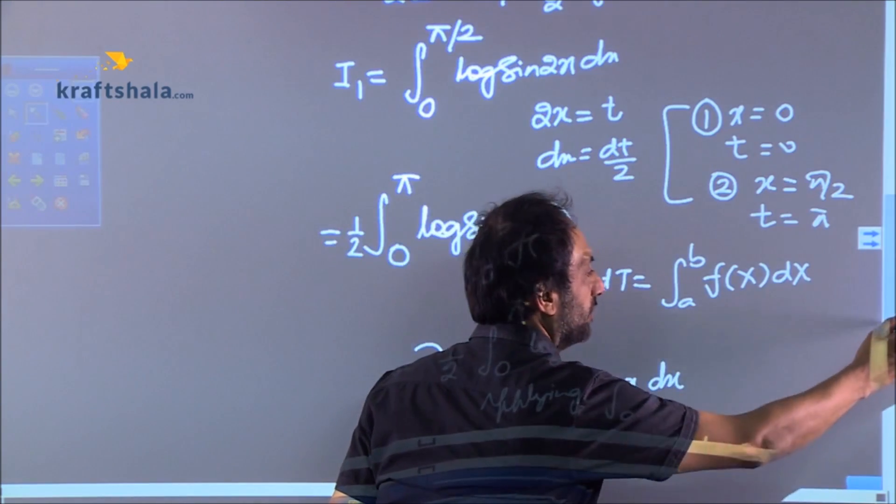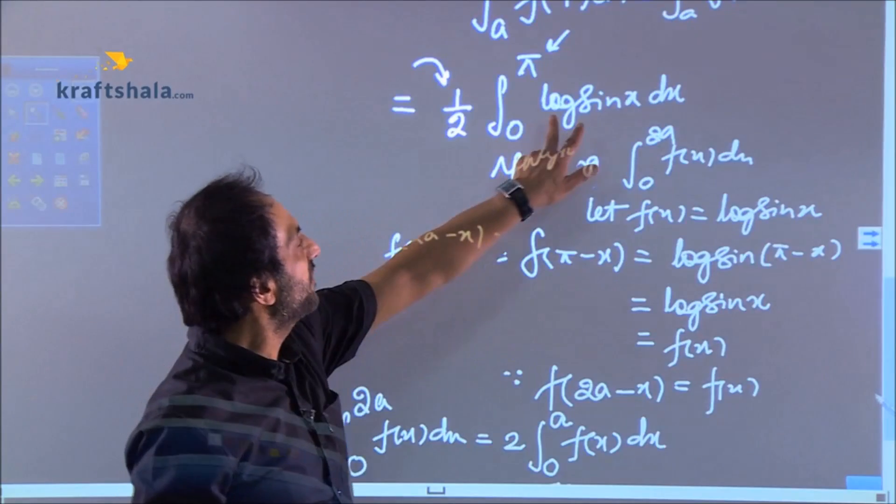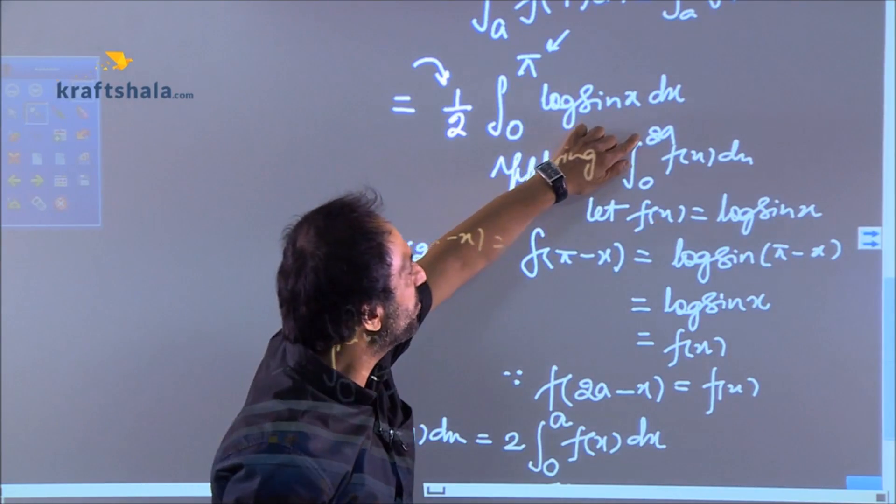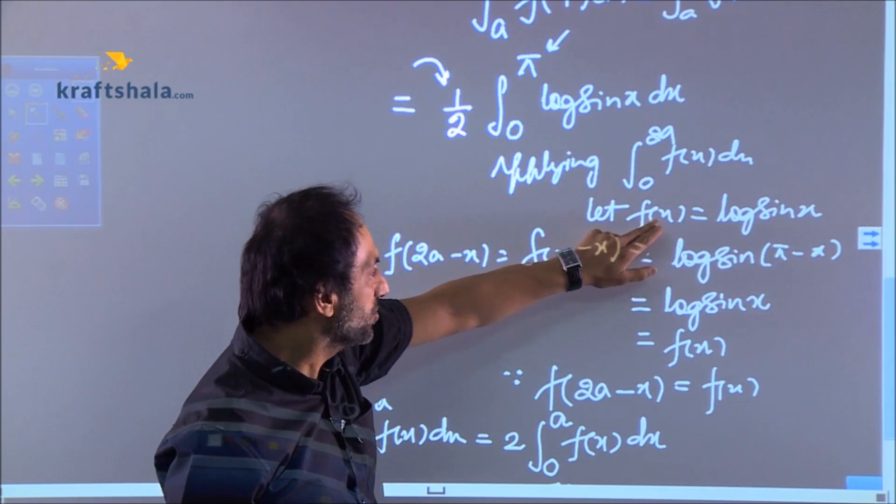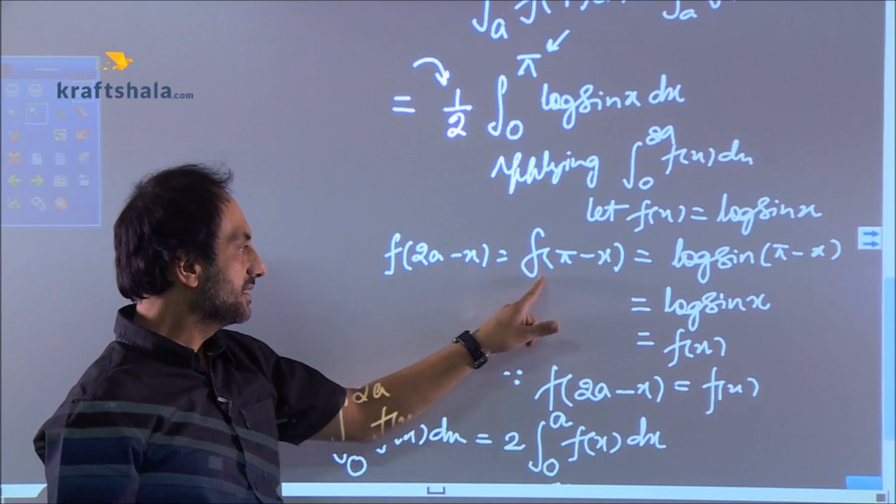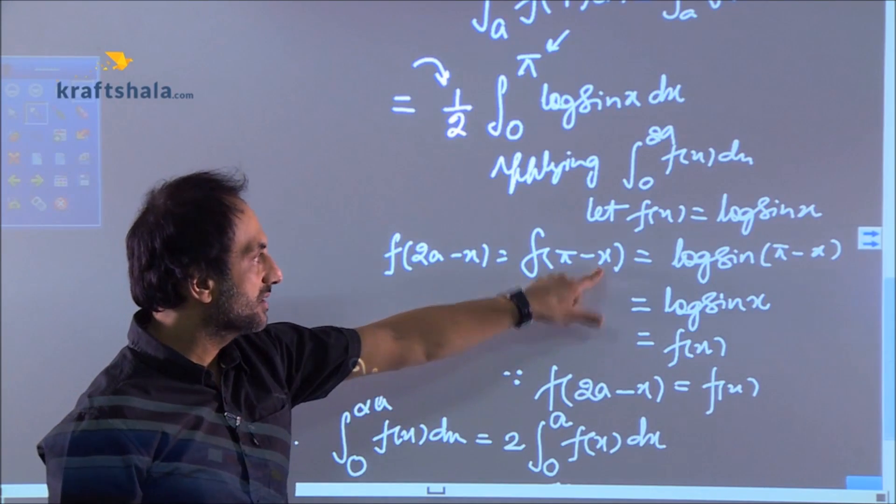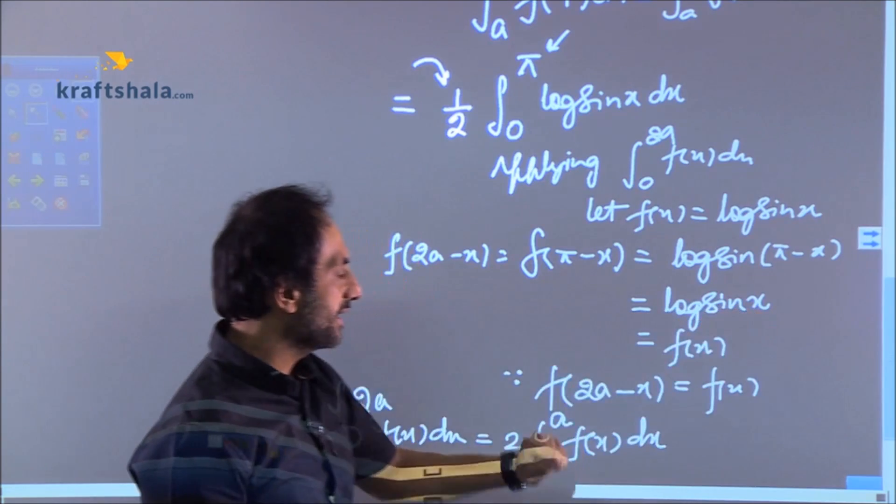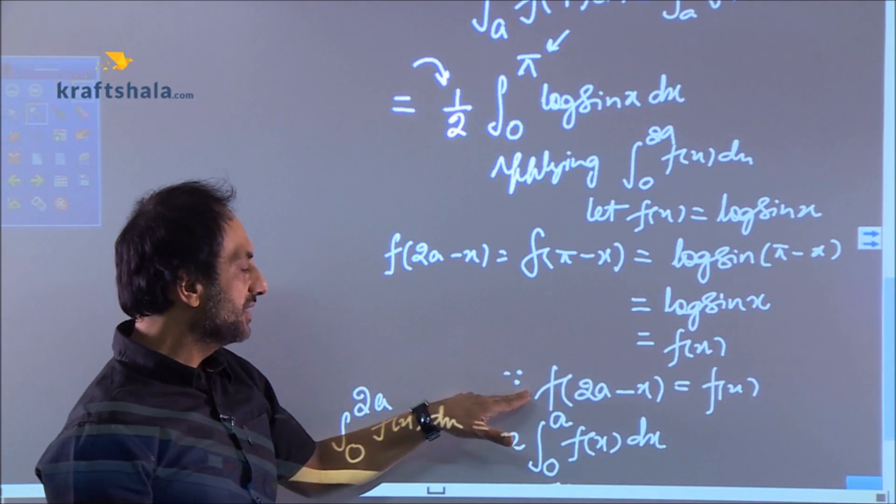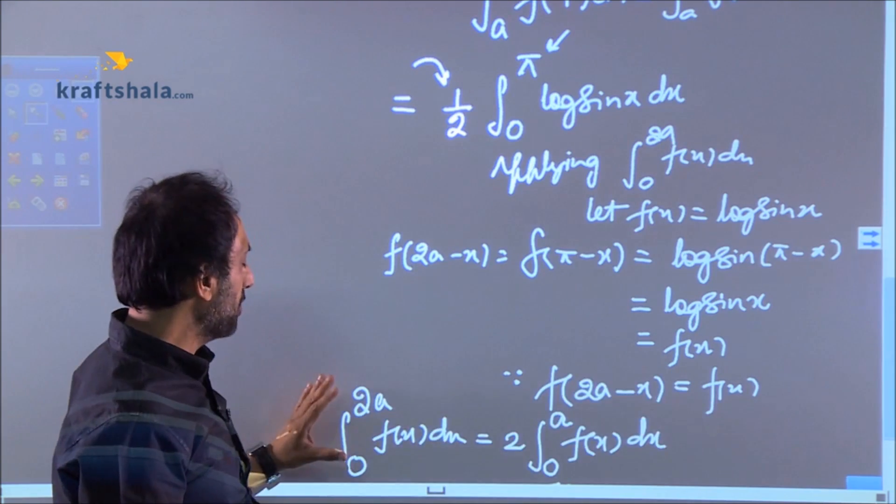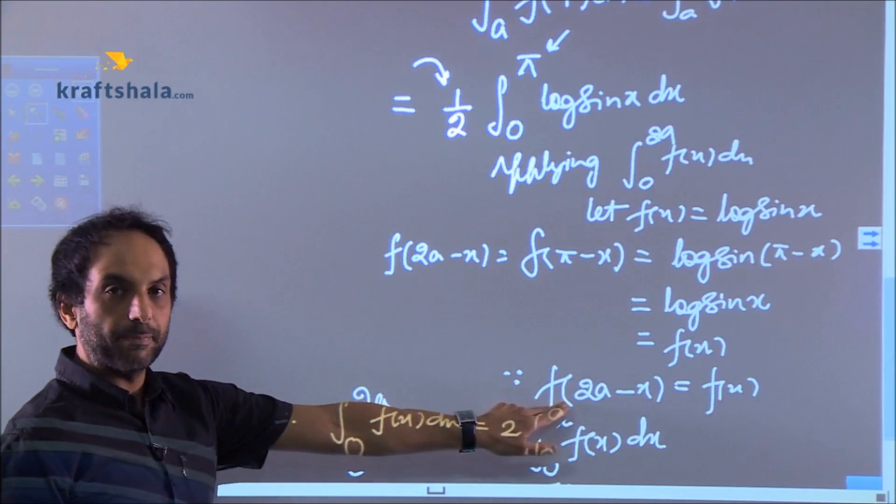For that what you do you take this function as f(x) and you apply 0 to 2a. So for that you need to do checking which is f(2a - x). This is f(π - x) obviously log sin(π - x) = log sin x = f(x) and we can see that f(2a - x) is f(x).